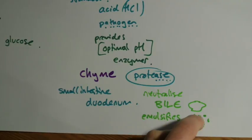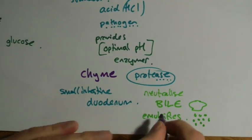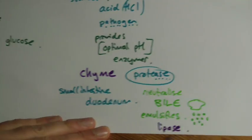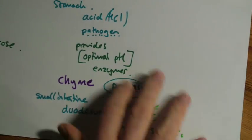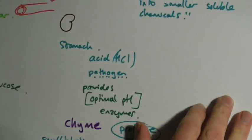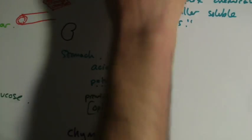So the fats are emulsified by bile. Fats are broken down by lipase enzymes. It then passes to the small intestine where it is absorbed.